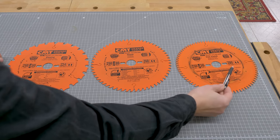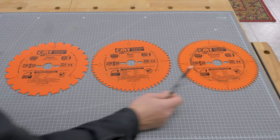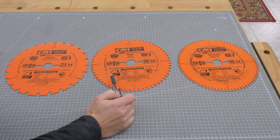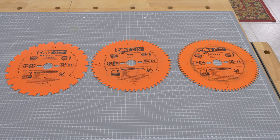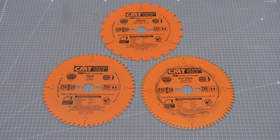The third saw blade has 80 teeth and is perfect for cross cutting wood and cutting all kinds of boards, even ones with melamine. Since it has so many teeth, it's not the best blade for rip cutting.